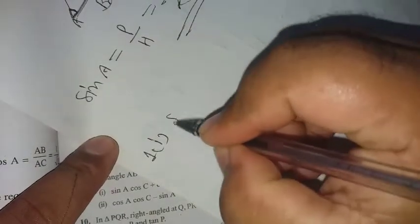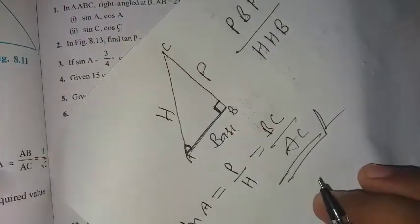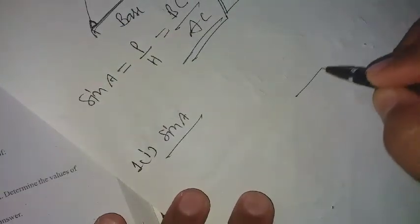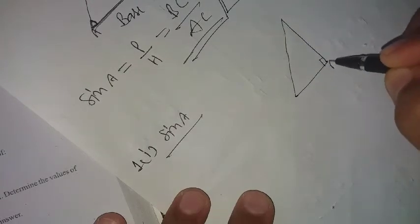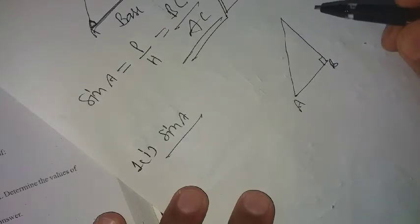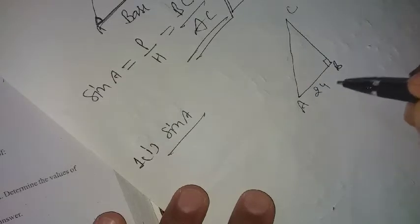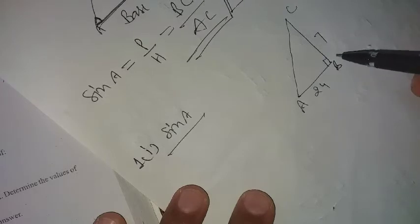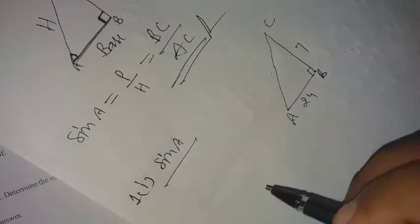We will find one ratio and you will find the rest. First, we make the figure here. It is one triangle right angled at B. A is this one and C is this. AB is 24, BC is 7.